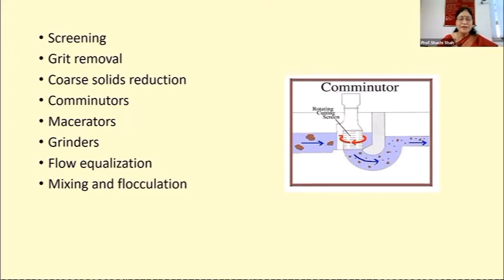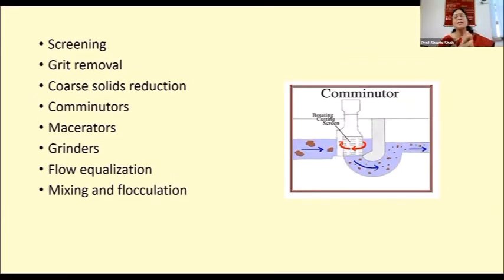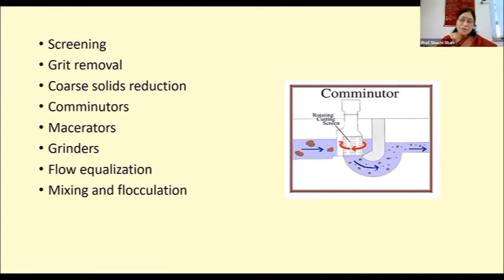The second physical method is grit removal. Grit removal is accomplished in a grit chamber or by centrifugal separation of solids. Grit chambers are designed to remove sand, gravel, cinders, and other heavy solid materials. These materials have a relatively large size and higher density than organic putrescible solids in the wastewater, so they have high settling velocity and settle fast. Grit removal is mainly a differential settling process based on the difference in density of various materials.